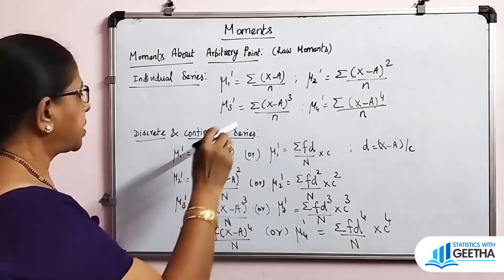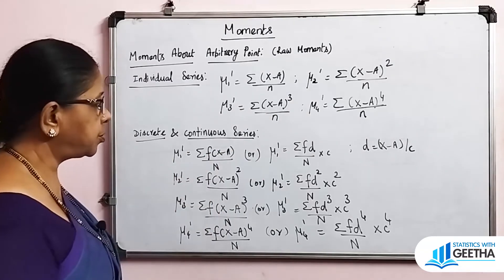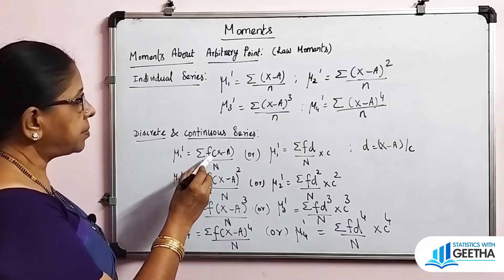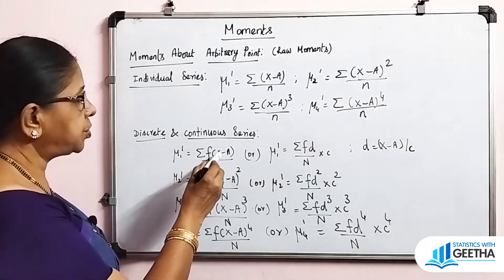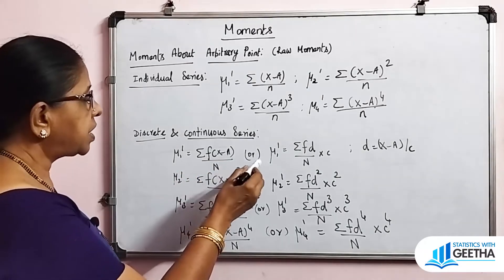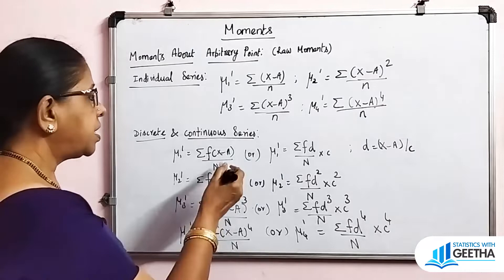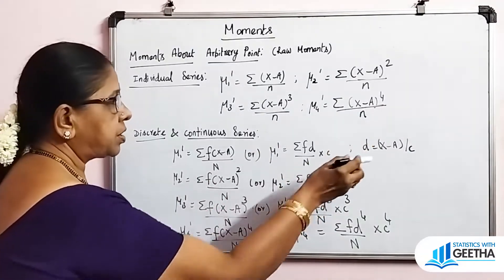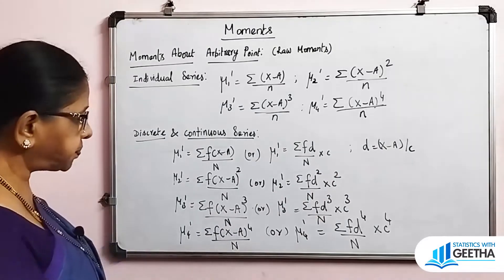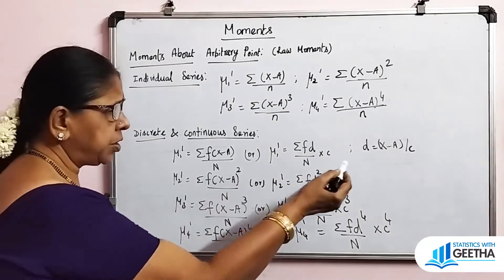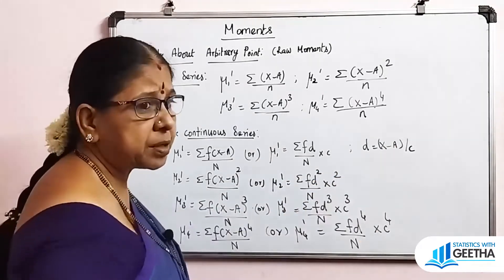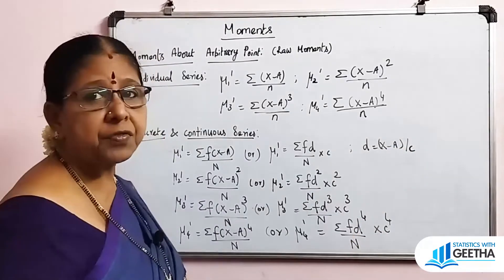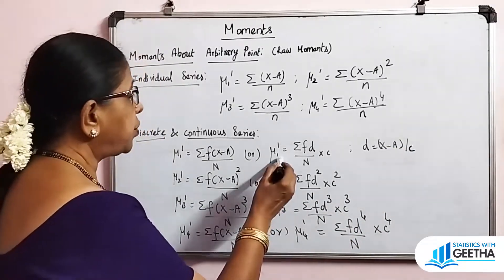For discrete and continuous series, f and capital N are used. For discrete series, d = x − A. For continuous series, d = (x − A) / c, where c is the width of the class interval. The simplified formulas use d in place of (x − A) with appropriate powers of c.